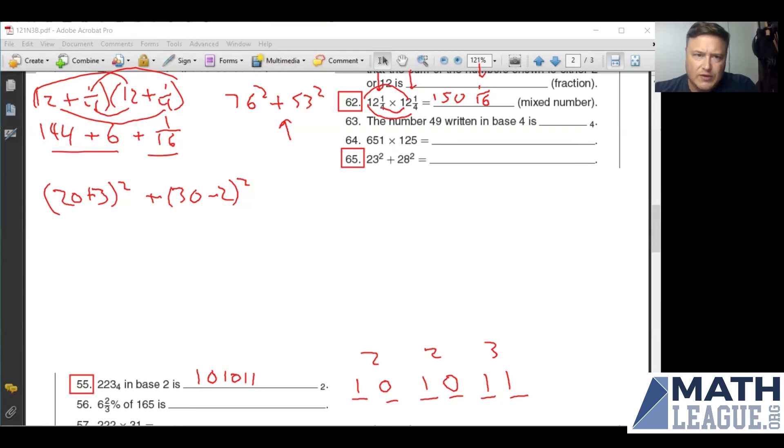So what you want to do to see how the trick works is foil it out. 20 plus 3 squared is going to be 20 squared plus 2 times 20 times 3 plus 3 squared. Then I've got 30 minus 2 squared, which is 30 squared minus 2 times 30 times 2 plus 2 squared. Let's take a look at the middle terms. 2 times 20 times 3. That's 40 times 3. This is 120. 2 times 30 is 60 times 2 is 120, but I'm subtracting it. Wait, I added 120. I subtracted 120. Those all cancel out.